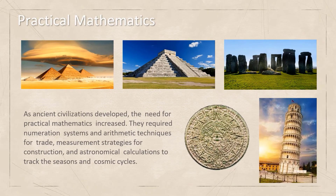Mathematics was used for practical purposes. They had started using the number system and arithmetic techniques for trade, construction, and astronomical calculations to track seasons and cosmic cycles.